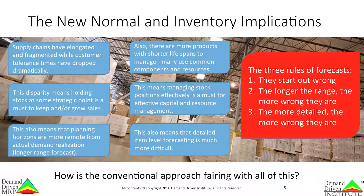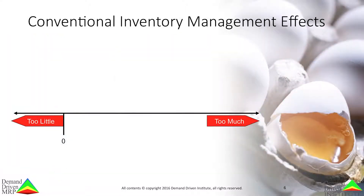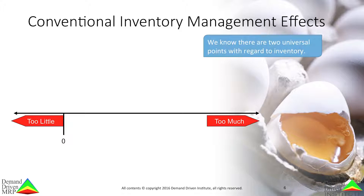So how are modern MRP systems dealing with these changing circumstances? In order to demonstrate just how poorly these systems are handling the new normal, we will use a simple graphic that most anyone familiar with supply chain will be comfortable with. We know that there are two universal points of inventory. Point A is too little — component shortages, expedites, and missed sales are experienced at this point. Point B is too much — there is excess cash, capability, materials, and space committed at this point.